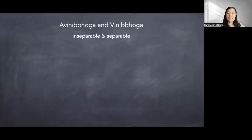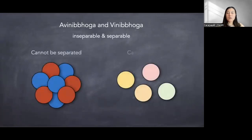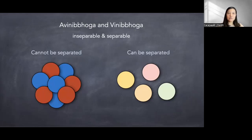What does it mean by inseparable and separable? Literally, as the word says, inseparable are those material properties that always arise together and cannot be separated. Whatever kalapa — the smallest unit of material property — it must always have these eight kinds of material properties that cannot be further separated. The other types can be separated, meaning that sometimes depending on the type of mata, they can be there or they cannot be there.